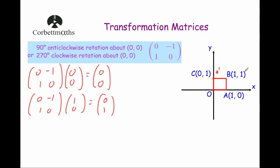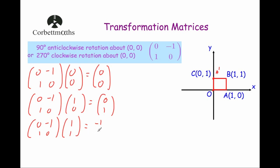Next, point B, the point 1, 1. If we rotate this 90 degrees anti-clockwise about the origin, it should move to minus 1, 1. So we've got the matrix 0, minus 1, 1, 0 multiplied by the point 1, 1. 0 times 1 is 0, minus 1 times 1 is minus 1, so the x coordinate is minus 1. Then the second row: 1 times 1 is 1, 0 times 1 is 0, adding them together is 1. So it moves to the point minus 1, 1 — that's the point B dash.